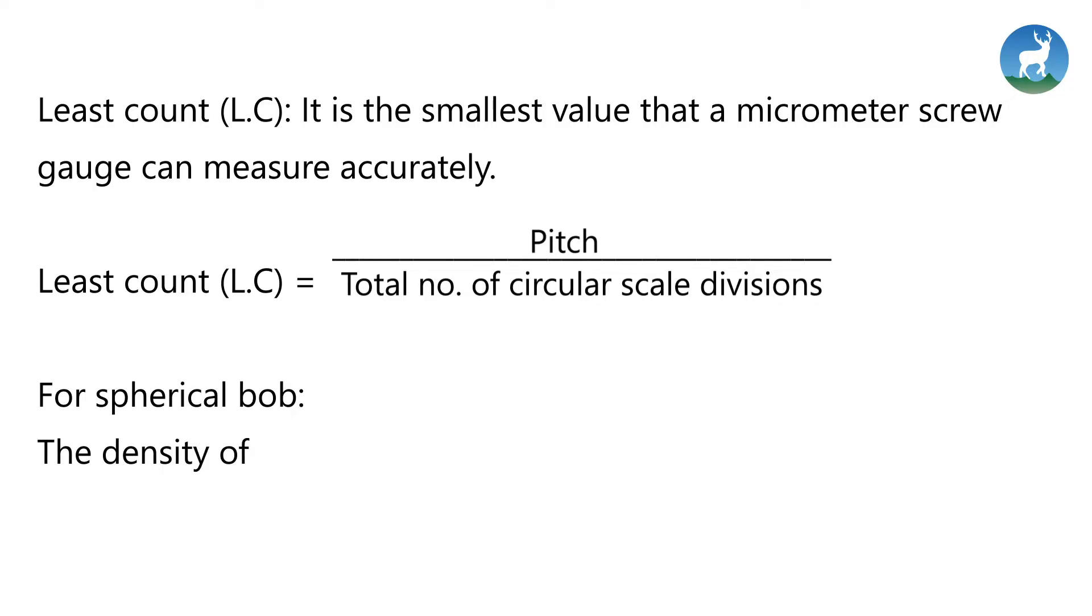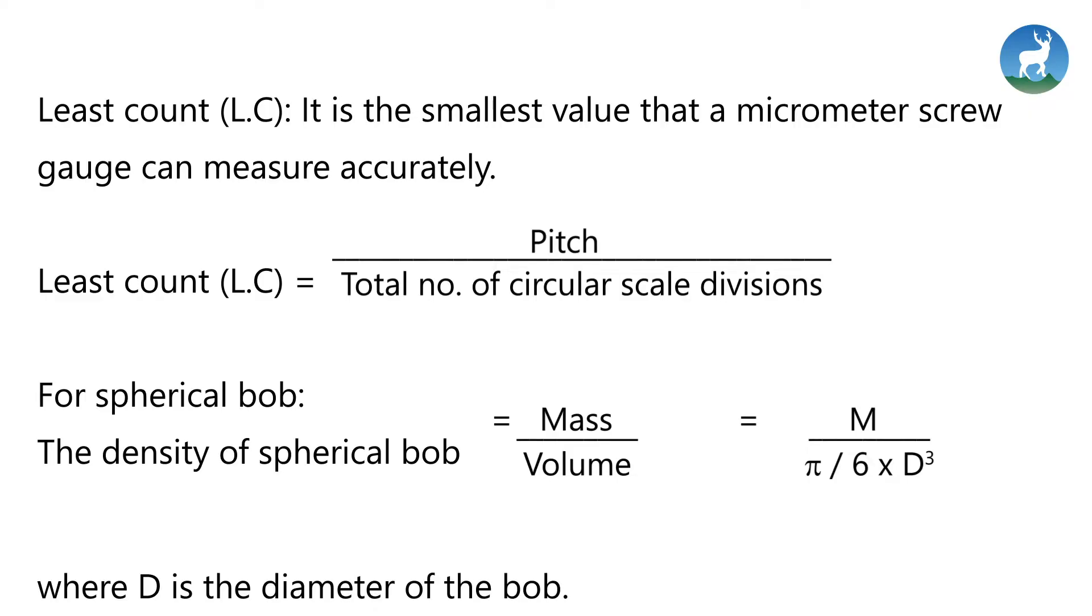For a spherical bob, the density of spherical bob is calculated by mass by volume, which is mass by pi by 6 into d cube, where d is the diameter of the bob.